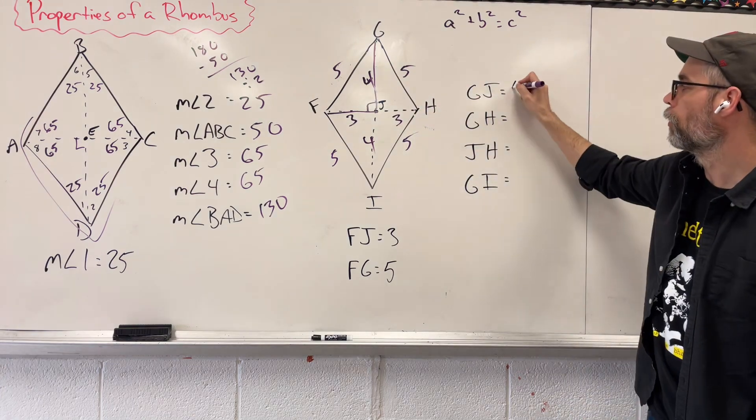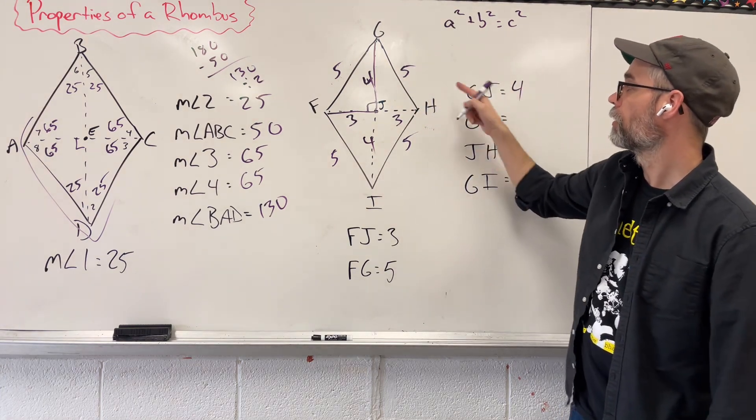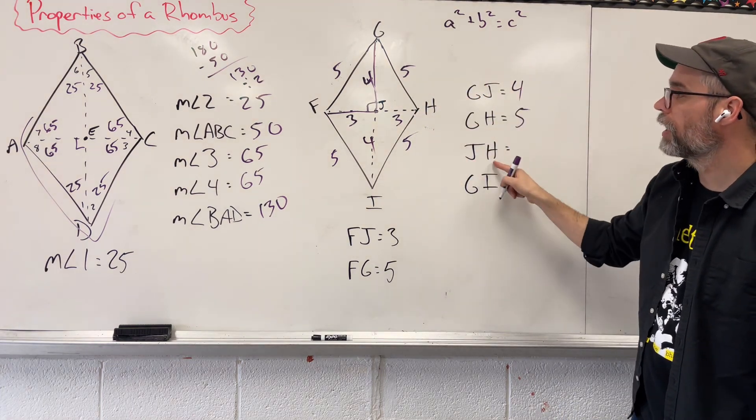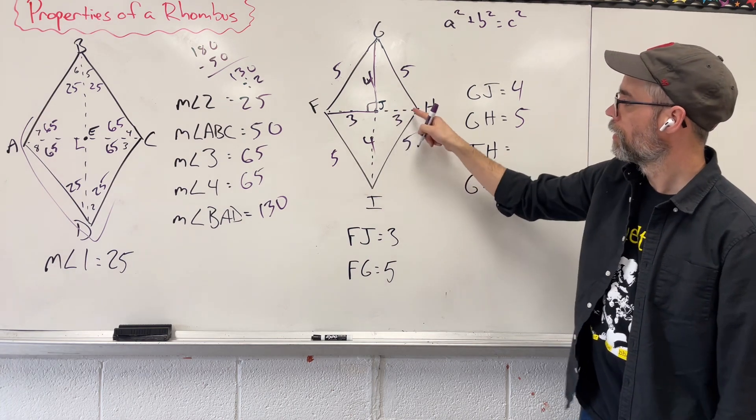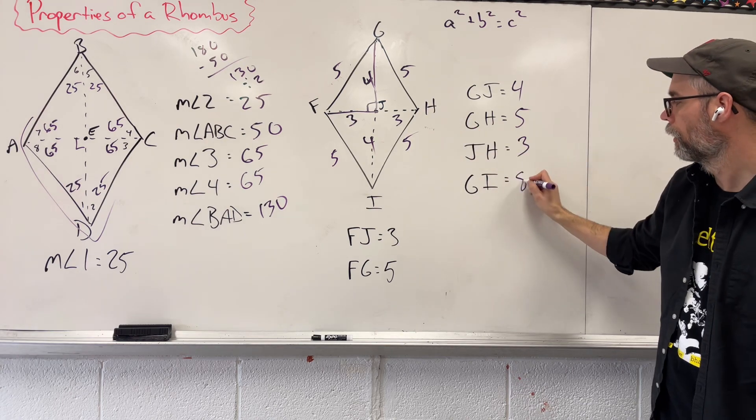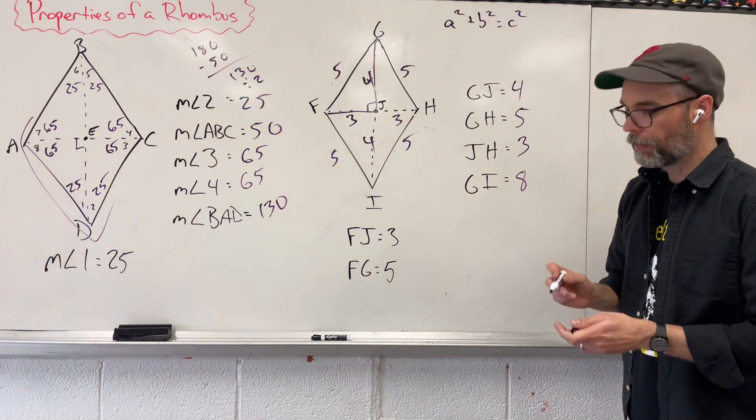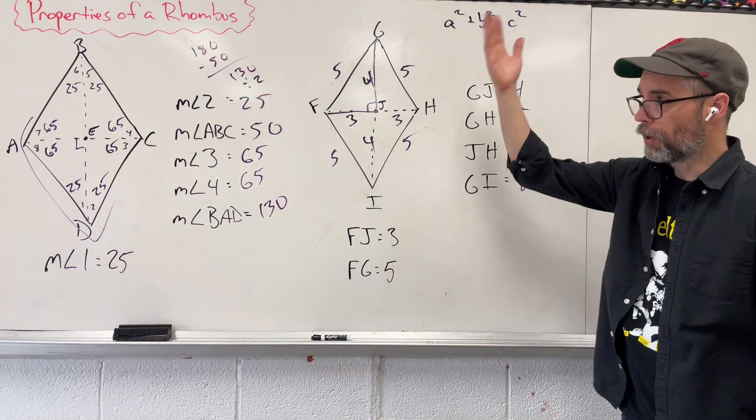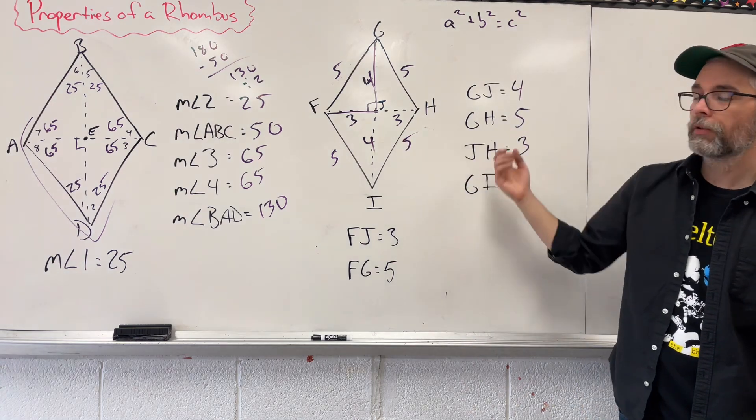GJ, GJ, 4. GH, 5. JH, 3. And GI, top to bottom, 4 plus 4, gives us 8. And that is properties of rhombus, both angles and length.